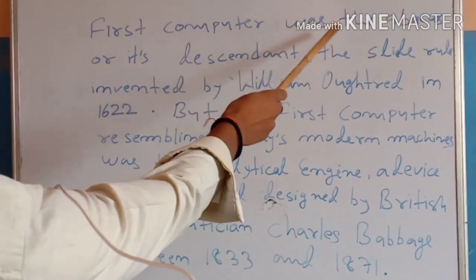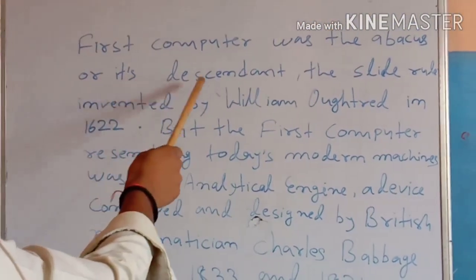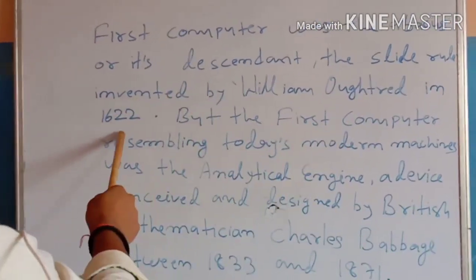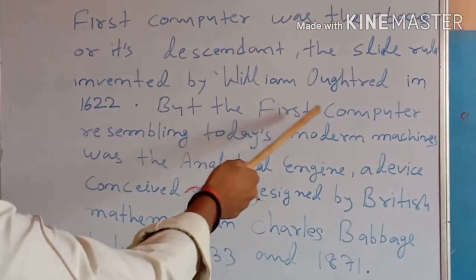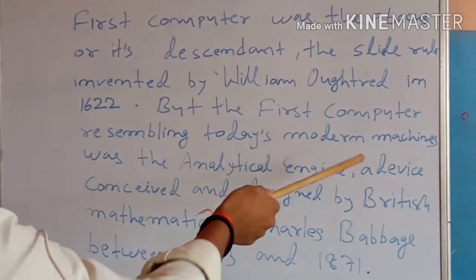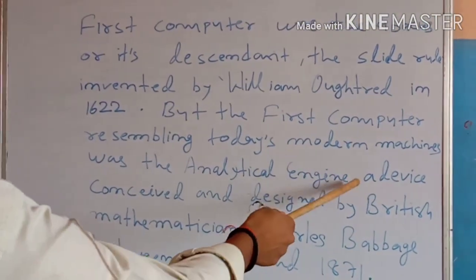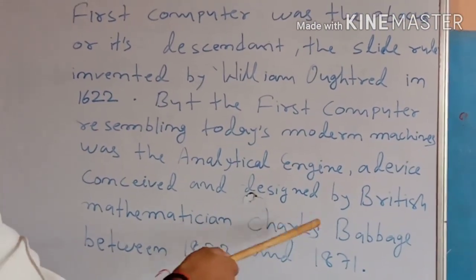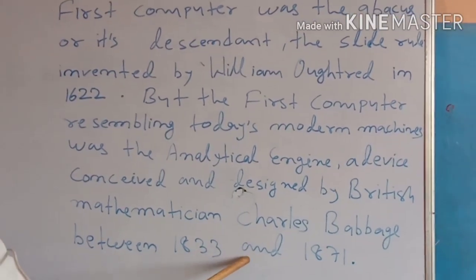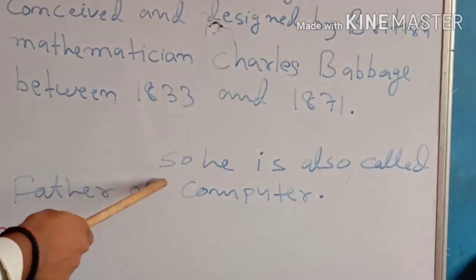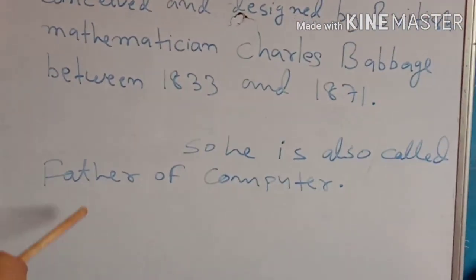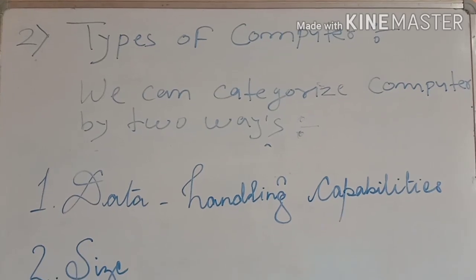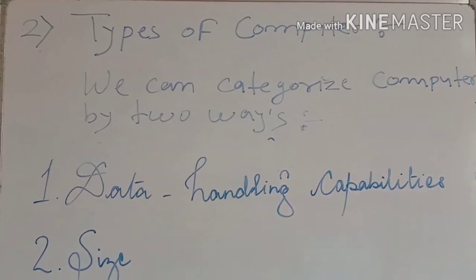To repeat: the first computer was the abacus, or its descendant the slide rule, invented by William Oughtred in 1622. But the first computer resembling today's modern machines was the Analytical Engine, conceived and designed by British mathematician Charles Babbage between 1833 and 1871 — so he is also called the father of computer. Now I am going to talk about types of computer. We can categorize computers in two ways.